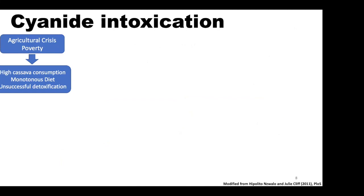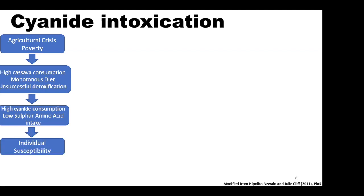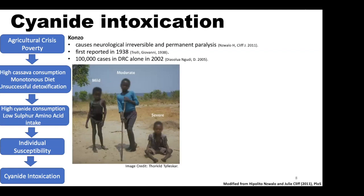One of those challenges is cyanide intoxication, which usually occurs during agricultural crises and mostly affects the poorest people living in rural areas. During these crises, people consume a lot of cassava consistently on a daily basis without successfully detoxifying it. This leads to cyanide intoxication based on individual susceptibility. This cyanide intoxication is called KONZO — a neurological disease that is irreversible and causes permanent paralysis of the lower limbs. It was first reported about eight decades ago. For example, in the Democratic Republic of Congo in 2002, about 100,000 cases were reported.